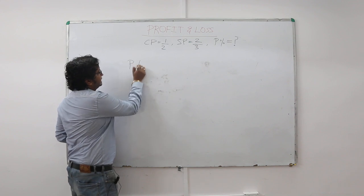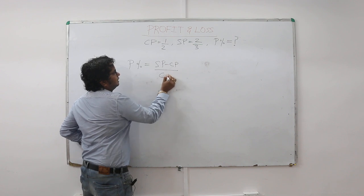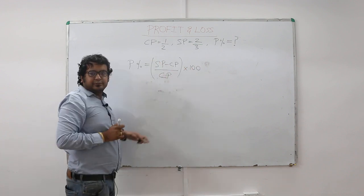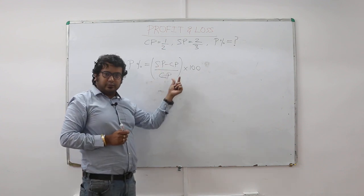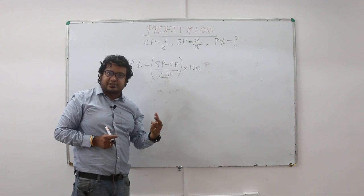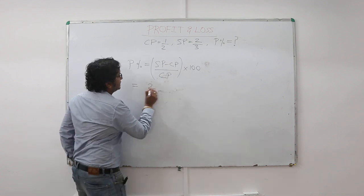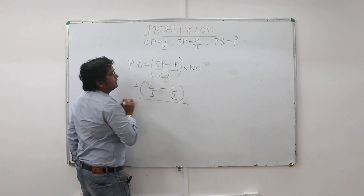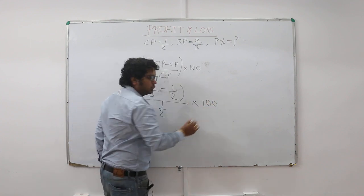Profit percentage is given by SP minus CP by CP into 100. Yes, the change in value divided by original value into 100. This is profit percentage. So how we used to calculate this? Yes, 2 by 3 minus 1 by 2 divided by 1 by 2 and into 100.